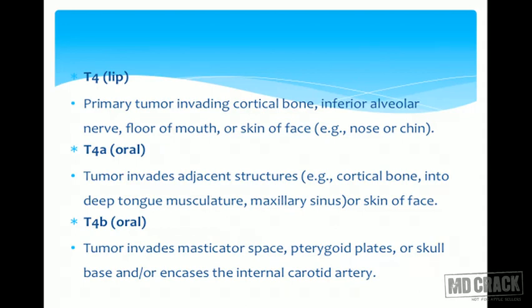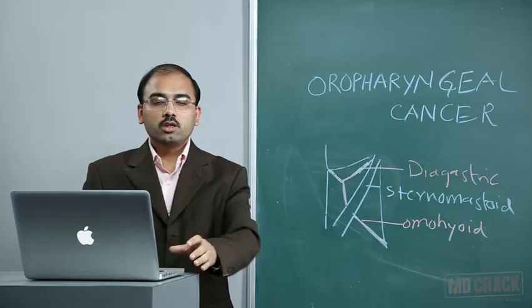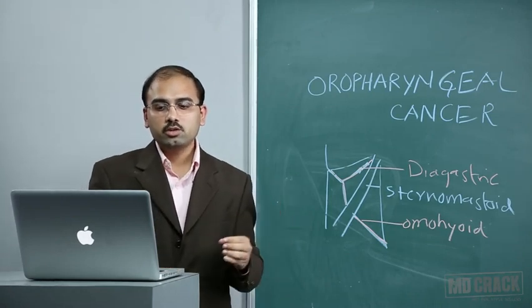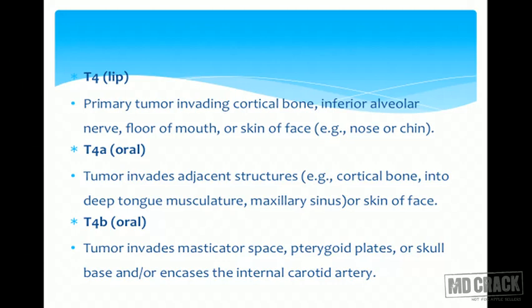T4 of the lip involves primary tumor invading cortical bone, inferior alveolar nerve, floor of mouth, or skin of the face, nose, or chin. For oral cavity, T4 is divided into T4a and T4b. T4a involves tumor invading adjacent structures such as cortical bone, deep tongue musculature, maxillary sinus, or skin of the face. T4b involves tumor invading the masticator space, pterygoid plates, skull base, or encasing the internal carotid artery.